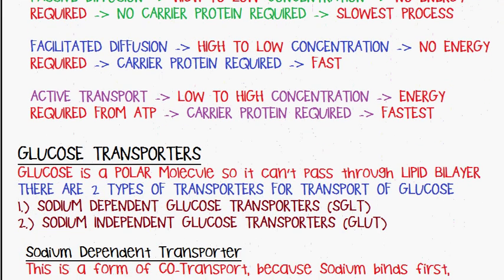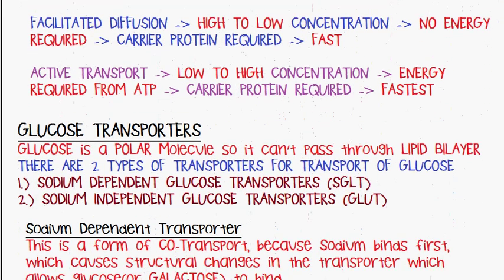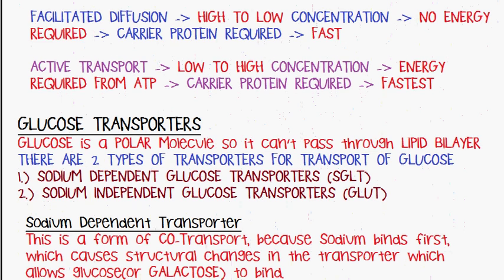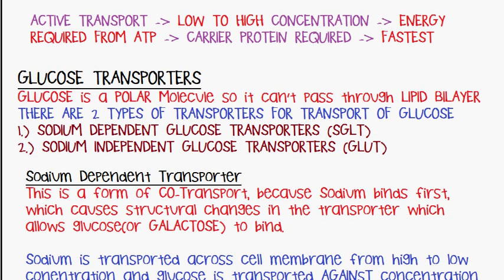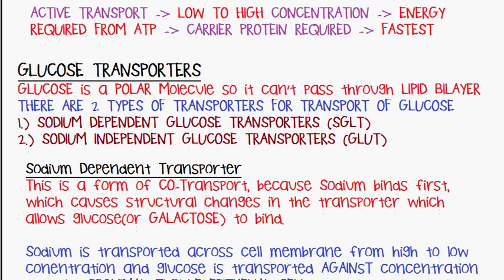When it comes to the absorption of monosaccharides, or glucose specifically, there are various transporters. Glucose is a polar molecule, so it can't pass through the lipid bilayer. Only non-polar molecules can pass through the lipid bilayer. There are two types of transporters for the transport of glucose and other monosaccharides.